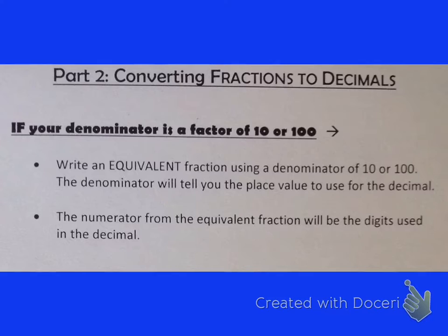The first way is if your denominator is a factor of 10 or 100, and this only works if that is the case. What you'll do is write an equivalent fraction using a denominator of 10 or 100. The denominator will tell you the place value to use for the decimal, and the numerator from that equivalent fraction will be the digits used in the decimal.